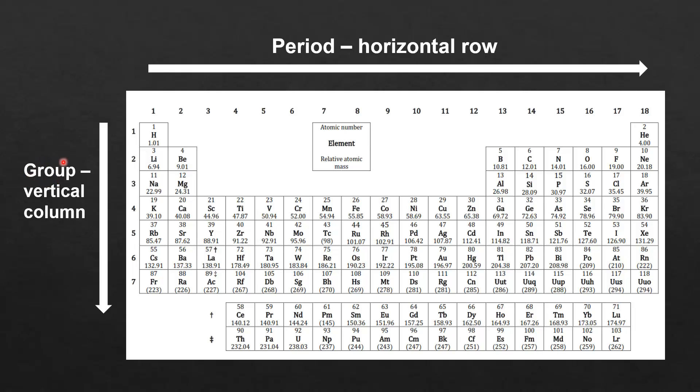So here we have the group, which is a vertical column. So we have group 1, group 2, group 3, group 4, group 5, group 6, and so on. And here we have a period, which is a horizontal row.